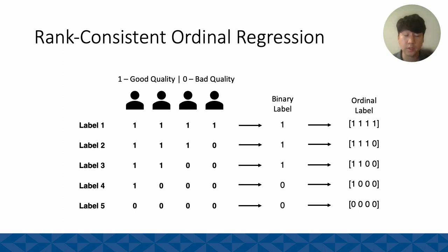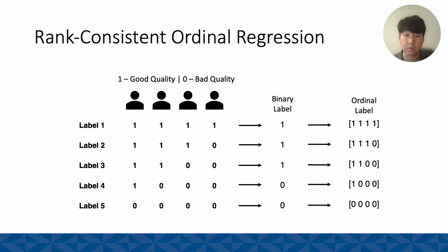As for our binary label, we took the majority rule: if more than half agree it's good quality, we consider it good quality, and vice versa — if less than half of the annotators consider it good quality, we consider it bad quality.